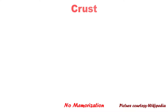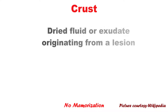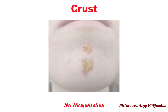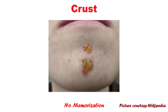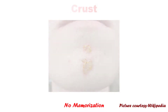The first one is a crust. It is a dried fluid or exudate originating from a lesion. For example, impetigo. Impetigo is an acute, very superficial, purulent skin infection. It initially appears as a vesicular lesion, later progressing to a golden yellow honey-crusted lesion, as you can see in this picture.